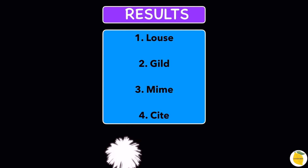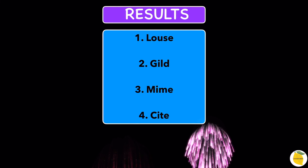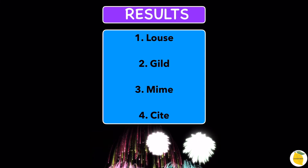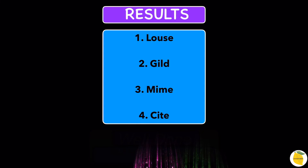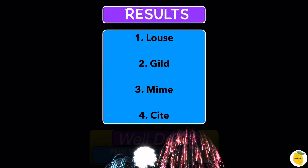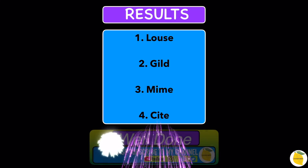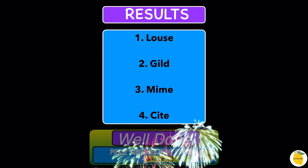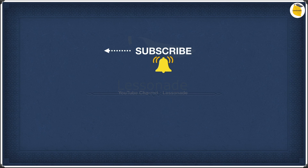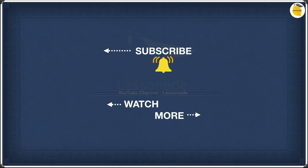Here are the results: the first answer is 'louse', the second is 'gilt', the third is 'mime', and the fourth is 'cite'. Well done for attempting the quiz — I hope you got them all right. To learn more 11 plus vocabulary, click the video on the right; for the previous set, click the video on the left. Thank you for watching — please subscribe, and I'll see you next time.